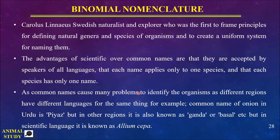Common names can create many problems for identifying organisms because different regions have different languages. For example, the common name of onion — in English it is called 'onion', in Urdu it is called 'pyaaz', and in some regions of Pakistan it is called 'ganda' or 'basar'. So there are already four different names for the same thing just within Pakistan, and other languages will have even more. That is why a scientific name is given — for example, the scientific name of onion is 'Allium cepa', which is a complete name based on two different terms.